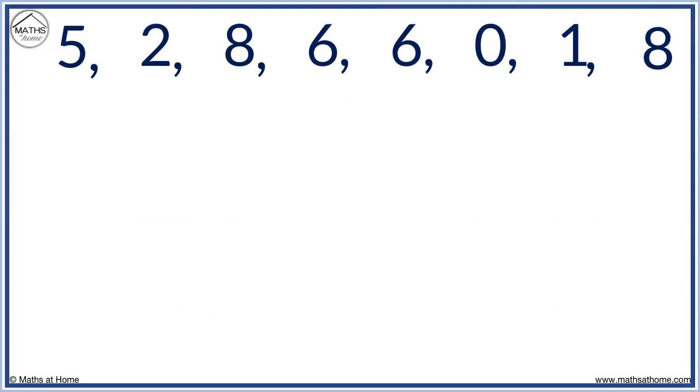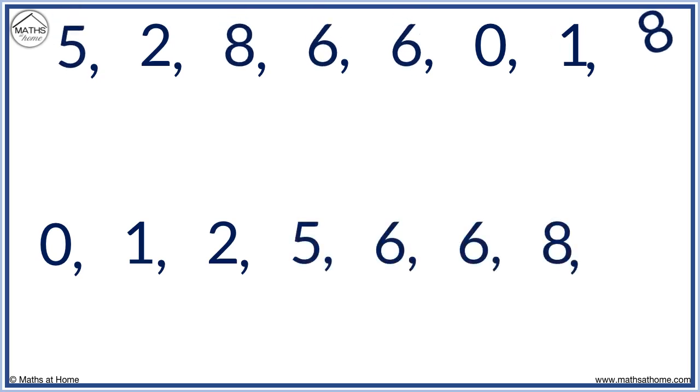Here is another set of data. Find the five number summary. It is important to always put the numbers in order if they are not already. We have zero, one, two, five, six, six, eight and eight. Zero is the minimum. Eight is the maximum.